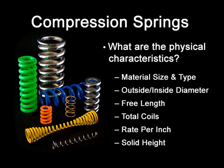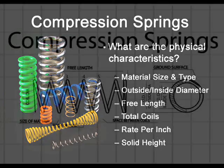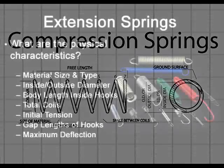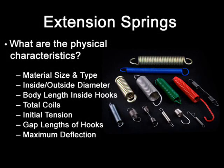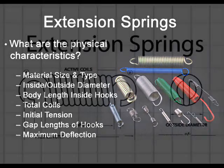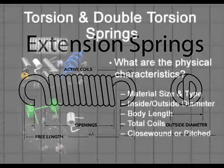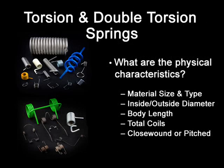Compression springs have the most common spring configuration. They are used to resist applied force or to store energy in a pushing motion. Extension springs store energy and exert a pulling force. They are usually made from round wire and are close wound with initial tension.